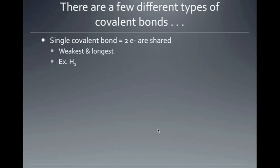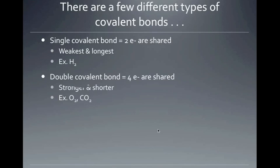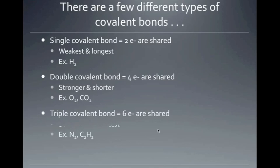There are a few different types of covalent bonds. In a single bond, two electrons are shared — this is the weakest and longest of the covalent bonds. A double bond has four shared electrons and is stronger and shorter than a single bond. A triple bond, where six electrons are shared, is the strongest and the shortest of the three bond types.